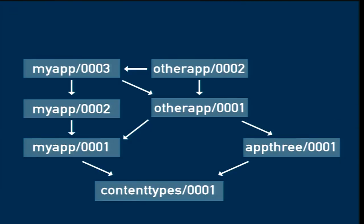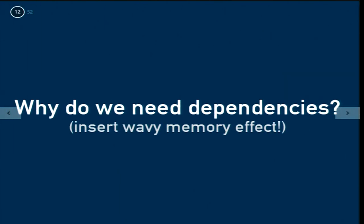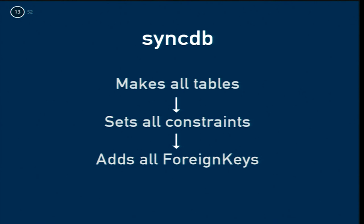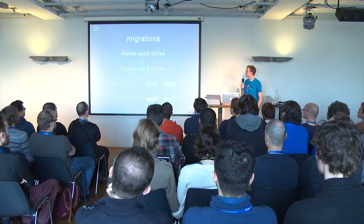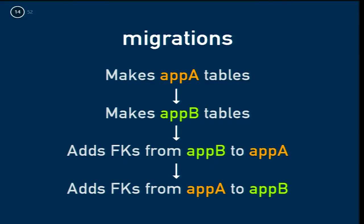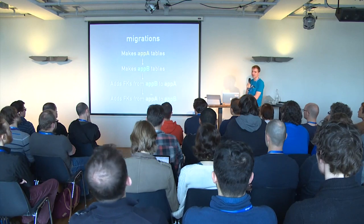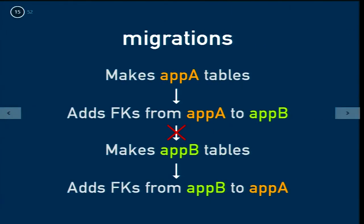This is how Django sees your migrations internally. We have this directed graph of stuff with dependencies between migrations, and this is very important. SyncDB obviously doesn't need dependencies because it makes all the tables, sets all constraints, sets all foreign keys, and it's done. Migrations, because it runs per-app — which is very important — has to handle dependency ordering. If you don't have dependencies and you loop through apps, you make app A's tables, then try to add foreign keys first, and it breaks because the tables aren't there yet.